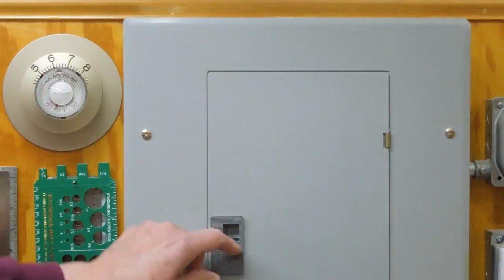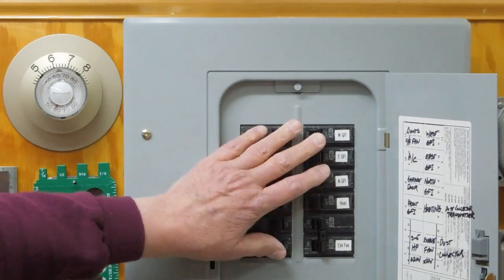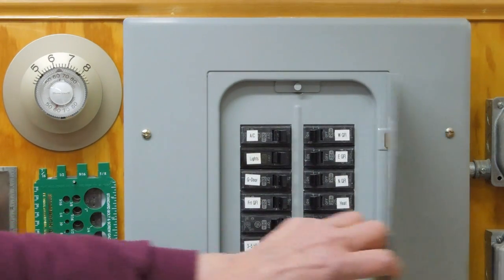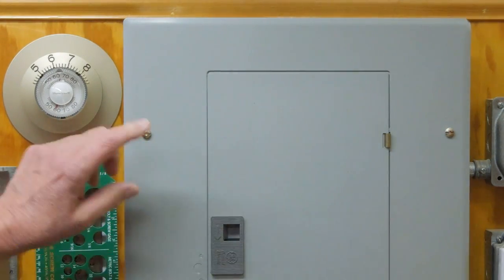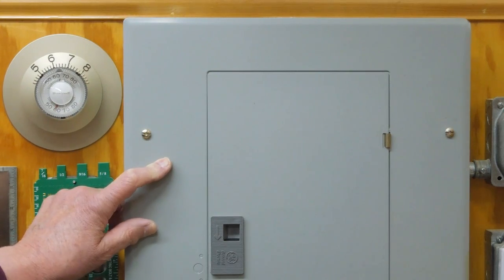This is an electrical panel. All your circuit breakers are in here. In order for an electrician to work on this, he has to remove the front cover plate.